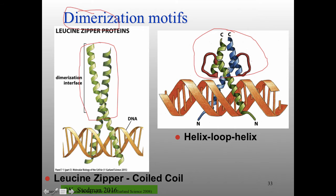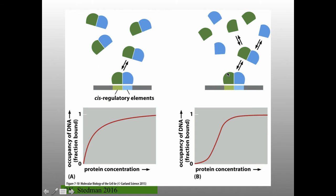Why do we care so much about dimers? Dimers can bind to individual half-sites that you can place right next to each other. For example, dark green binding light green and light blue binding light blue represents different sequences on either side — a heterodimer — where these two half-sites give you specificity.